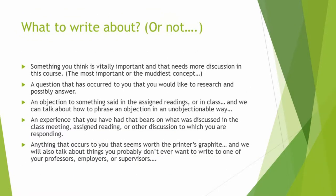So what should you write about — or not? The best place to start is with something you think is vitally important and needs more discussion in the course. It might be the most confusing concept, or the one where the most errors have been committed by people writing about a given research subject. It might be a question you'd like to research and possibly answer, or one you'd like the instructor to look into more closely. It might be an objection to something said in the assigned readings or in class, and we can talk about ways to phrase an objection in an unobjectionable way.